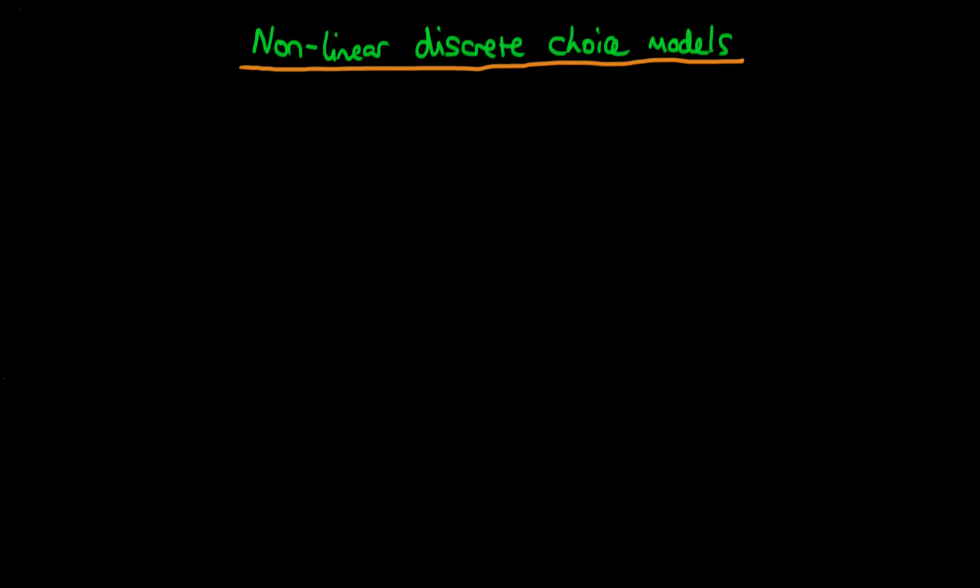In this video I want to talk about how we can solve some of the issues with the linear probability model by creating a nonlinear discrete choice model.